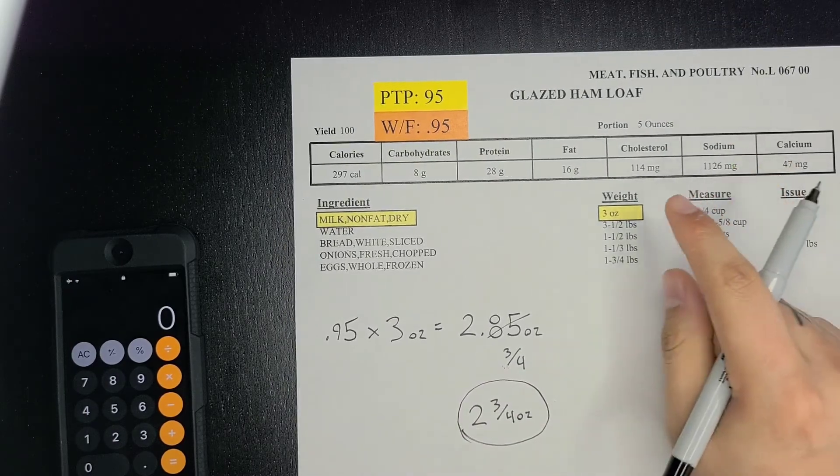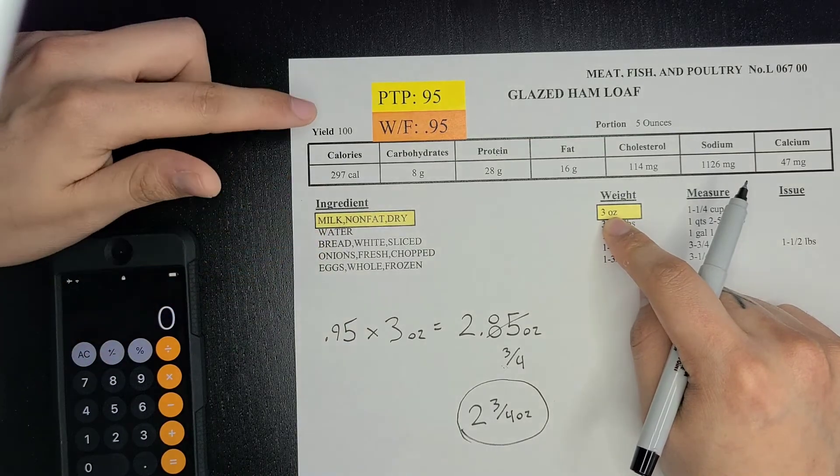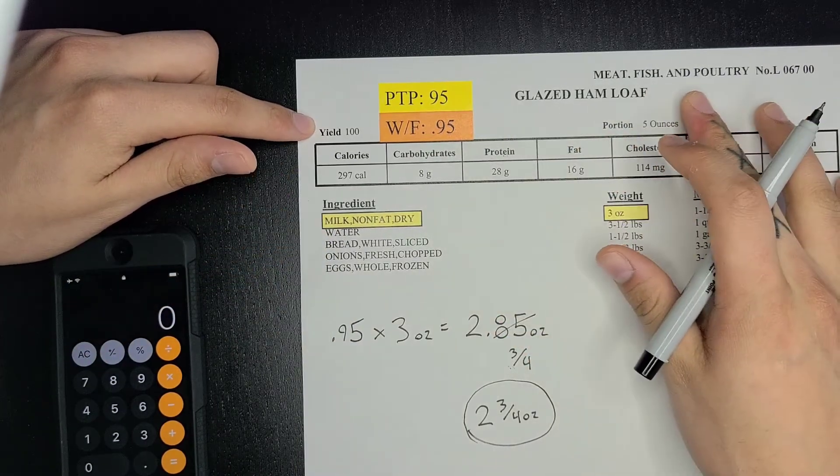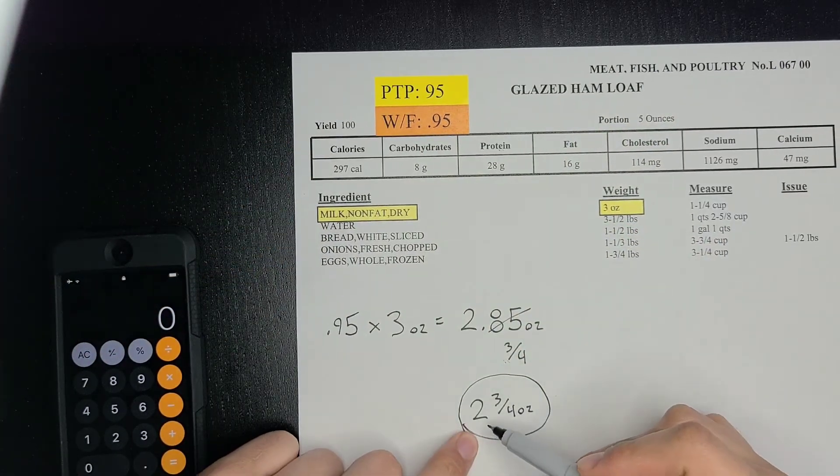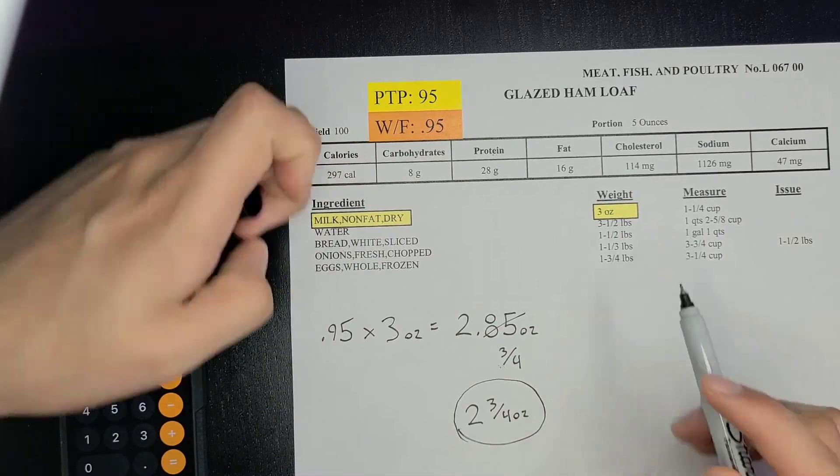With the three ounces of non-fat dry milk, you can make 100 portions for your glazed ham loaf. With 2 and 3/4 ounces, you can make the 95 portions that you wanted to make.